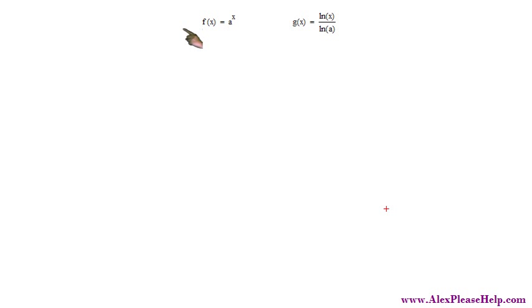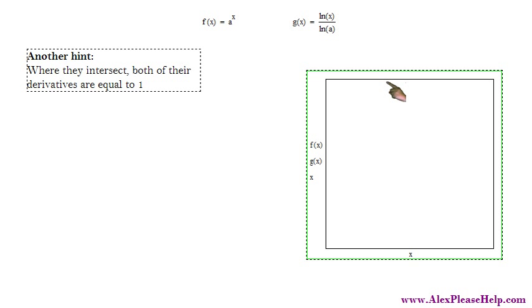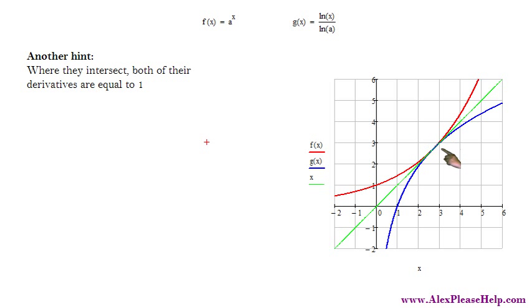You have the two functions, f and g. I'm going to give you another hint. And that is that where they intersect at this one single point, their derivatives are both equal, and they're both equal to 1. They are inverses of each other, so they will reflect about the line y equals x. So that means their derivative is going to be equal if they intersect at that one point. So if their derivatives are both equal to 1, differentiate them.